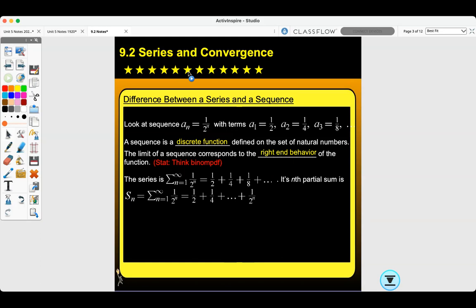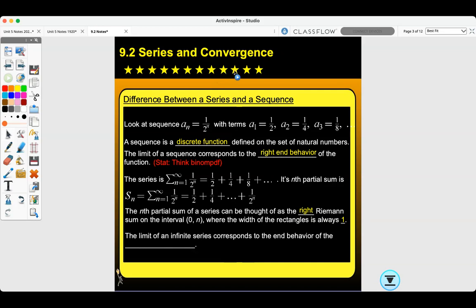The series is the nth partial sum of the sum. The nth partial sum of a series can be thought of as the right Riemann sum of the interval 0 to n, where the width of the rectangles is always 1. The limit of an infinite series corresponds to the behavior of the accumulator function. Think in statistics, binomial cdf.